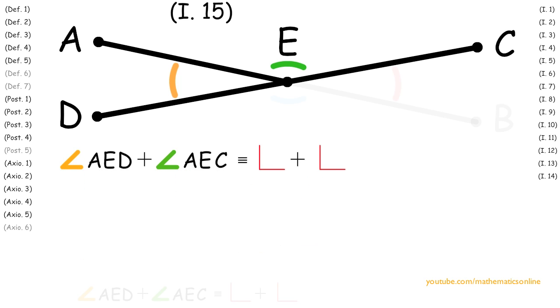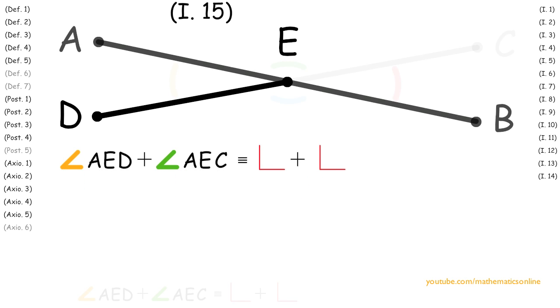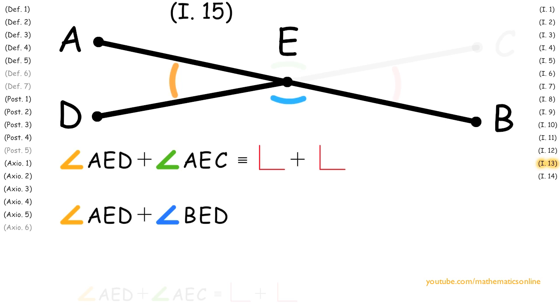Looking at the straight lines DE and AB, we can see that by Proposition 13, the adjacent angles AED plus BED are congruent to the sum of two right angles.